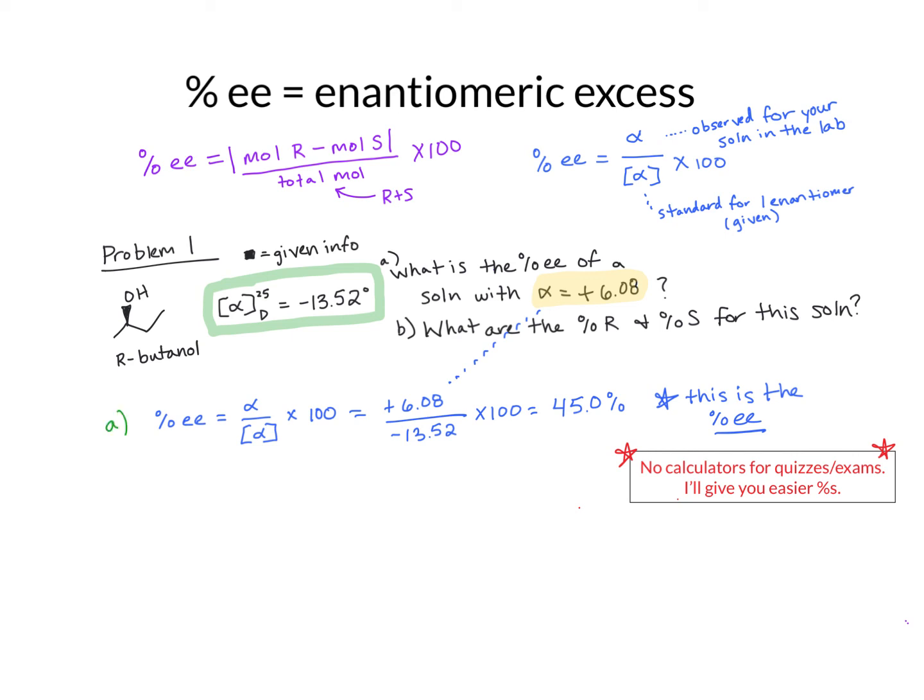So now that we know what's the percent enantiomeric excess, we need to figure out how much R and S there is. So how do we know which one we have more of? It's actually going to be based on the alpha that we got for the experiment. So it says the alpha for the experiment was plus, right? And the standard we're given is minus. So that means if those are opposite signs, is it R or S? It has to be the opposite, right, of what's given. So that means that since it's plus, it would actually be there's an extra amount of S. So we have more of that.